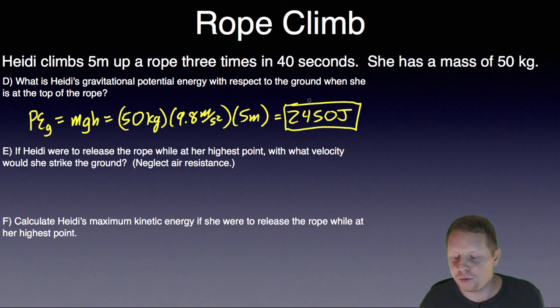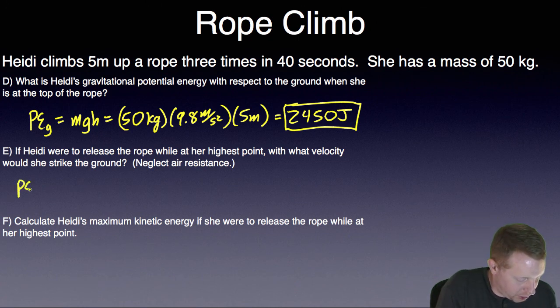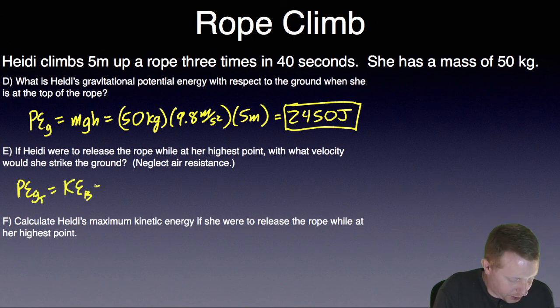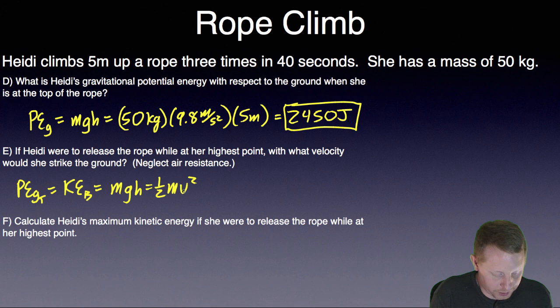Now though, if Heidi were to release the rope while at her highest point, with what velocity would she strike the ground? Excuse me, neglecting air resistance. Probably not a good idea, but if she did it, what would happen? Well, that potential energy she had at the top of the rope must be transformed into kinetic energy right before she strikes the ground. So we could say that potential energy due to gravity at the top must be equal to the kinetic energy at the bottom, or mgh equals 1 half mv squared, where v is at the bottom.